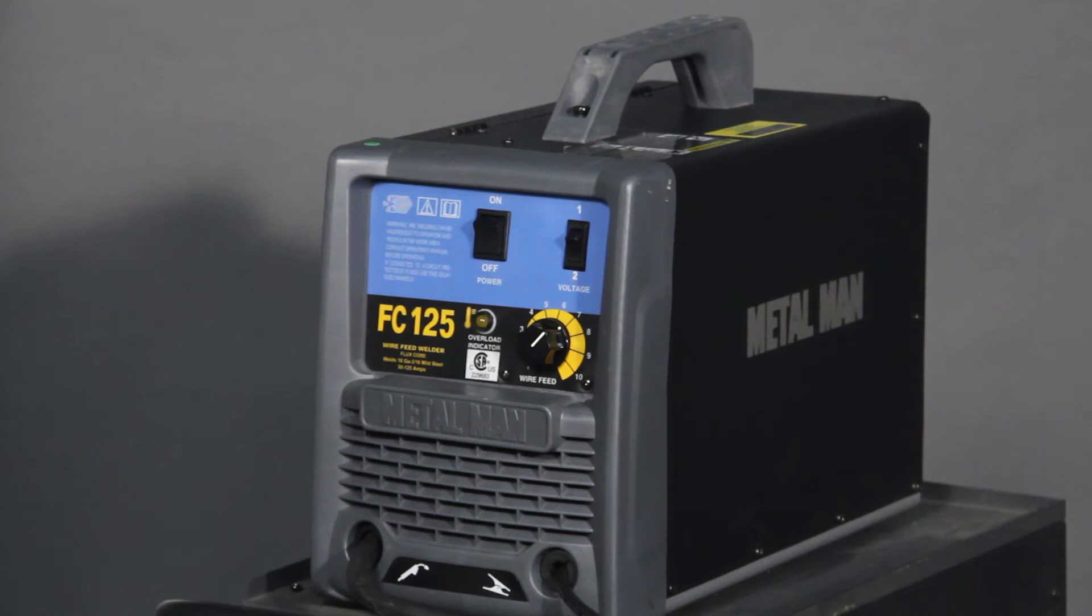Flux core welding uses the same concept as stick welding. It burns a flux as part of the welding process. The difference is, the flux is on the inside of the continuous hollow wire electrode.